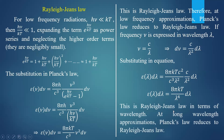This is Rayleigh-Jeans law in terms of wavelength. It says energy density is directly proportional to 1/λ⁴. Much decrease in energy density is observed for the higher wavelength region. Low frequency radiation corresponds to higher wavelength radiation, since frequency and wavelength are inversely proportional. Therefore, Planck's law reduces to Rayleigh-Jeans law at long wavelength approximation.